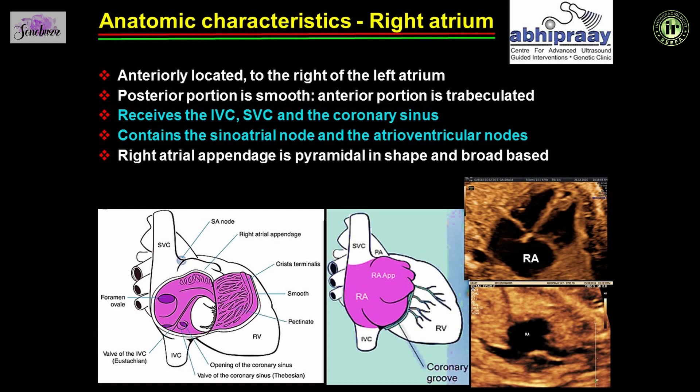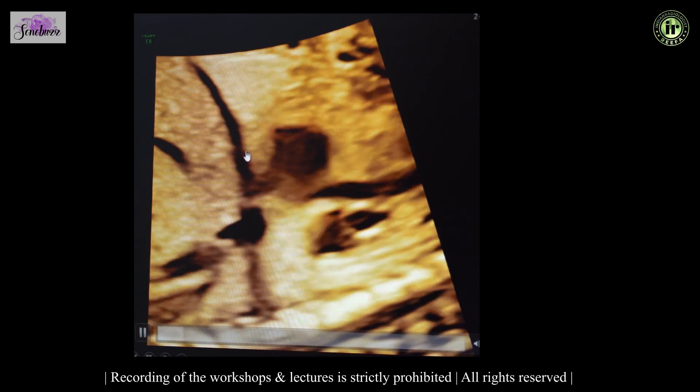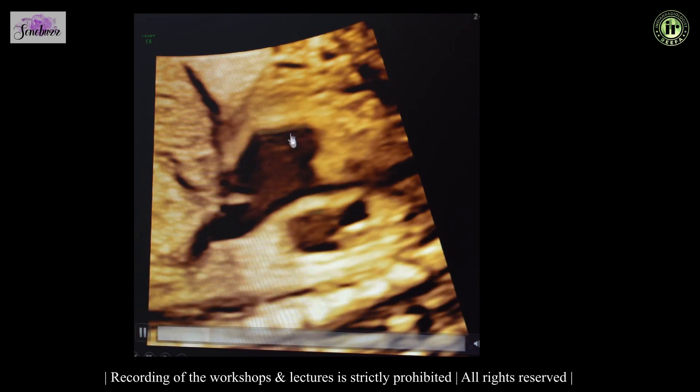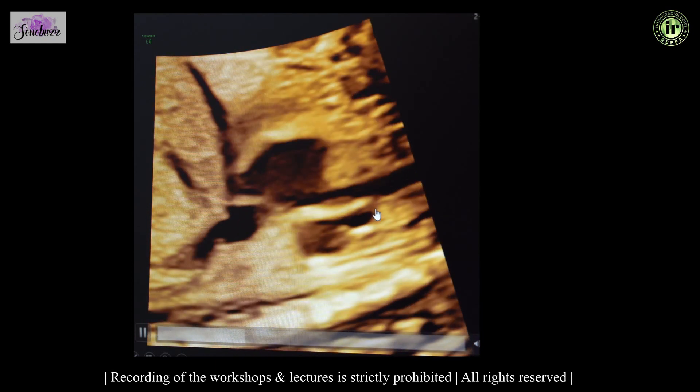The right atrium is anteriorly located to the right of the left atrium. It receives the IVC, the SVC, and the coronary sinus, and contains the sinoatrial node and the AV node — information that is important in cases of isomerism. In the bicaval view, you can see the IVC and the SVC opening into the right atrium.